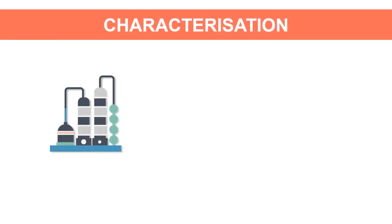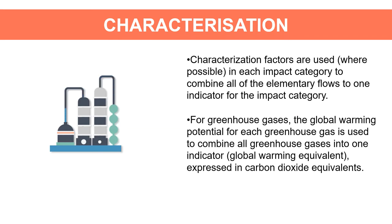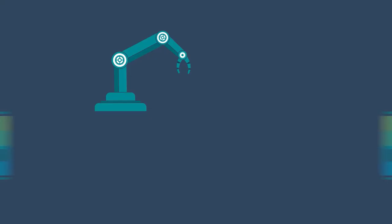Characterization: characterization factors are used where possible in each impact category to combine all elementary flows into one indicator for that category. For greenhouse gases, the global warming potential for each gas is used to combine all greenhouse gases into one indicator — global warming equivalent — expressed in carbon dioxide equivalents.